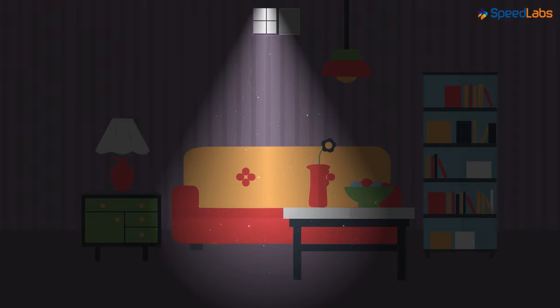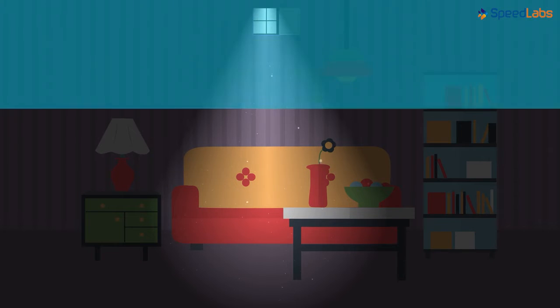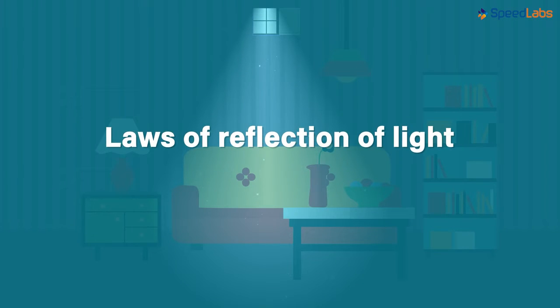In this video, we saw that the reflection of light plays an important role. It's because of the reflection of light that we are able to see most of the objects. In the next video, we will talk about the laws of reflection of light.